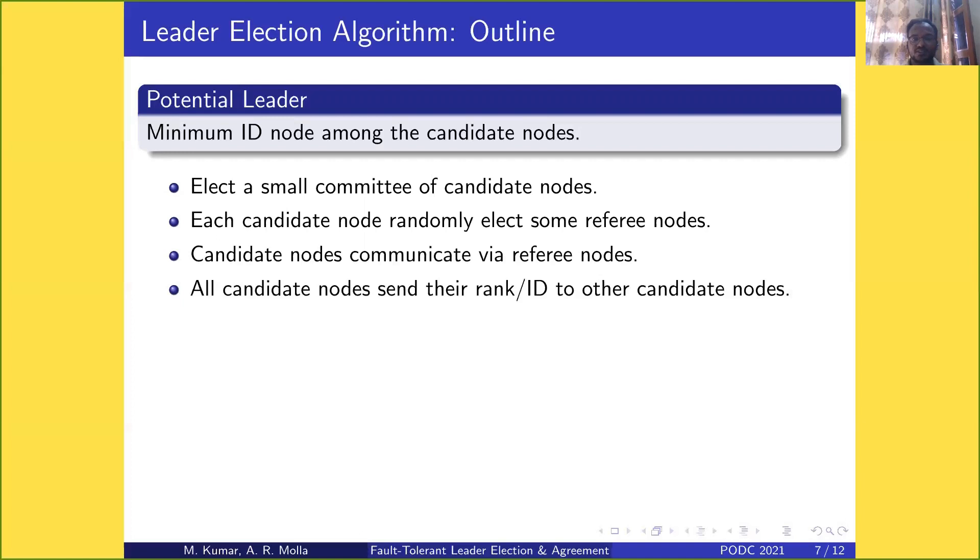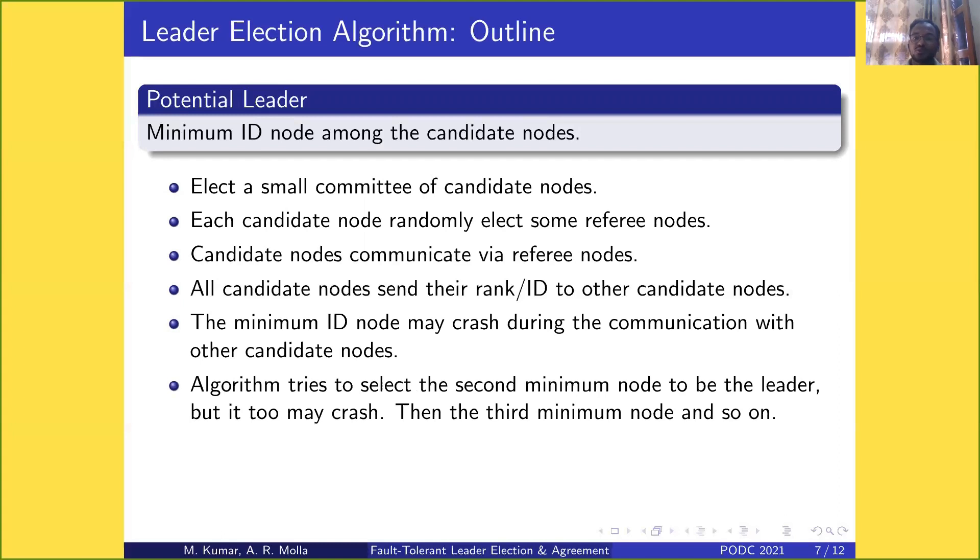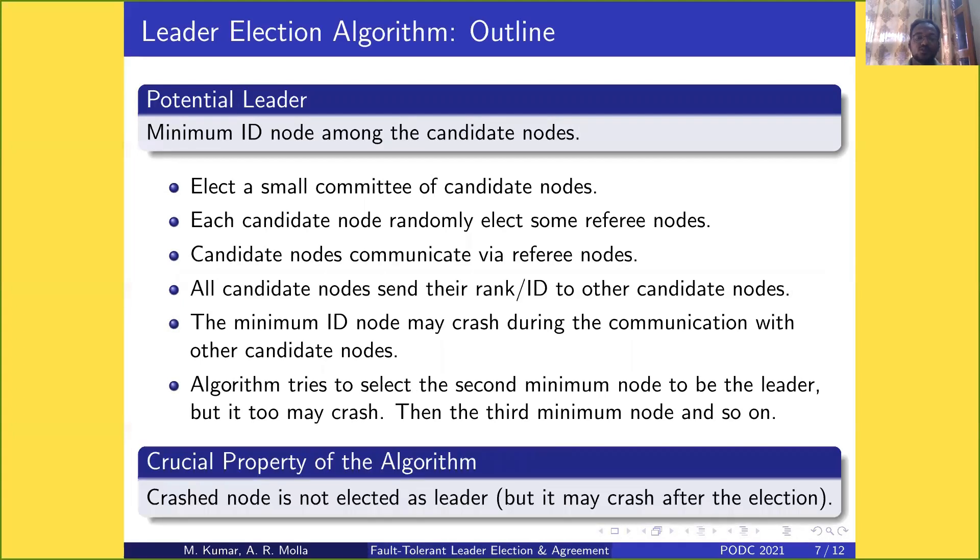All candidate nodes send their rank/ID to other candidates. The minimum ID node may crash during communication with other candidates. The algorithm tries to select the second minimum node as leader if the first crashes, then the third, and so on. The crucial property: a crashed node is not elected as leader, but it may crash after election.